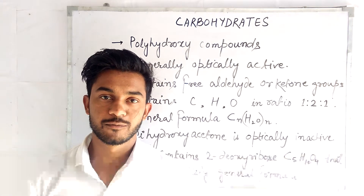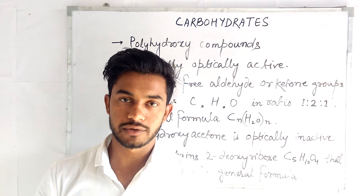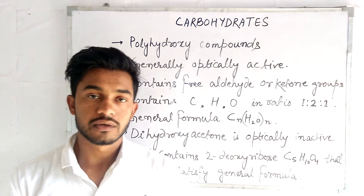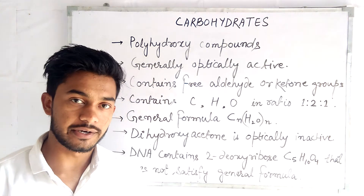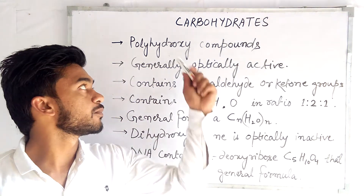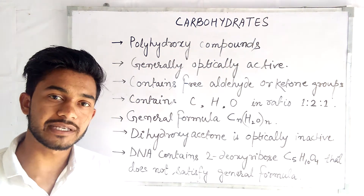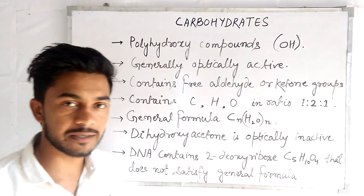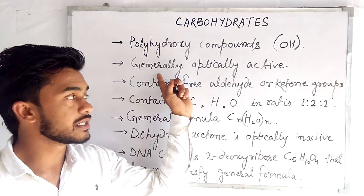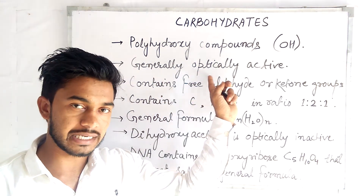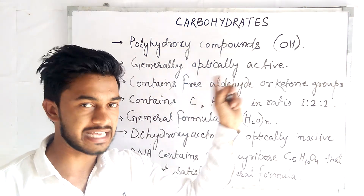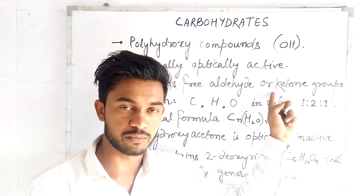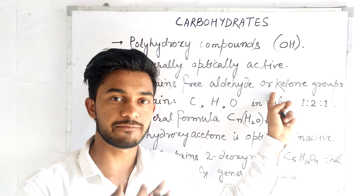Welcome to Farman Khan's biology tutorials. Today's topic is carbohydrates. Carbohydrates are polyhydroxy compounds, meaning they contain OH groups. Second, they are generally optically active. Third, they contain free aldehyde or ketonic groups, so they are reducing sugars.